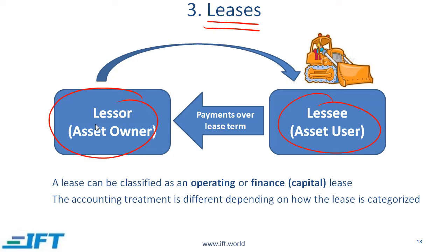The lessor is the owner of the asset. Let's say that we have a company that owns lots of earth-moving equipment. The lessor is the entity that actually owns the equipment, but the lessor leases the equipment to a lessee, who uses the asset and in return for using the asset, the lessee makes payments over the lease term.